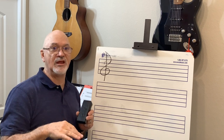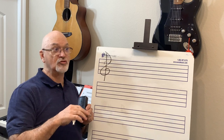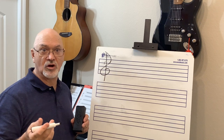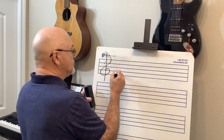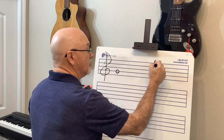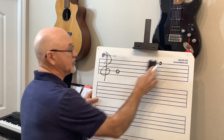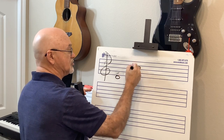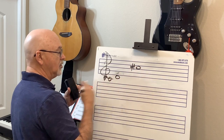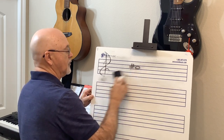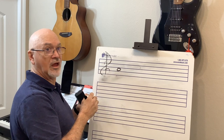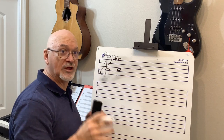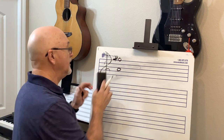In sharp keys, the leading tone gives you the last sharp. Key of D: leading tone is C-sharp, so the key has F-sharp and C-sharp. Key of A: leading tone is G-sharp, so F-sharp, C-sharp, G-sharp. Key of E: leading tone is D-sharp, giving F-sharp, C-sharp, G-sharp, D-sharp. The leading tone will always give you the last sharp in the sharp keys.